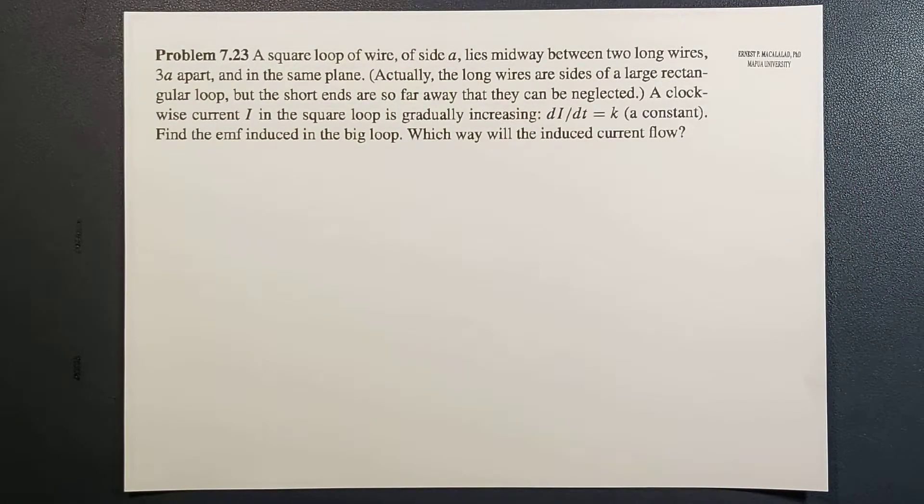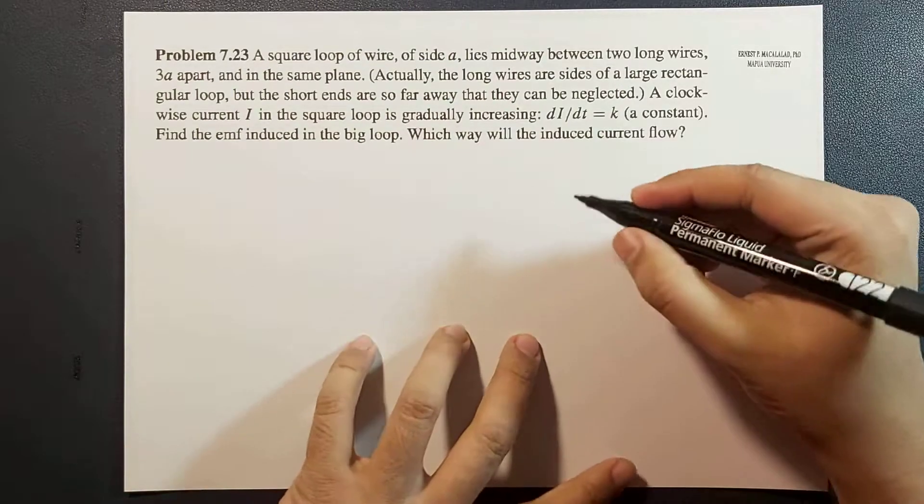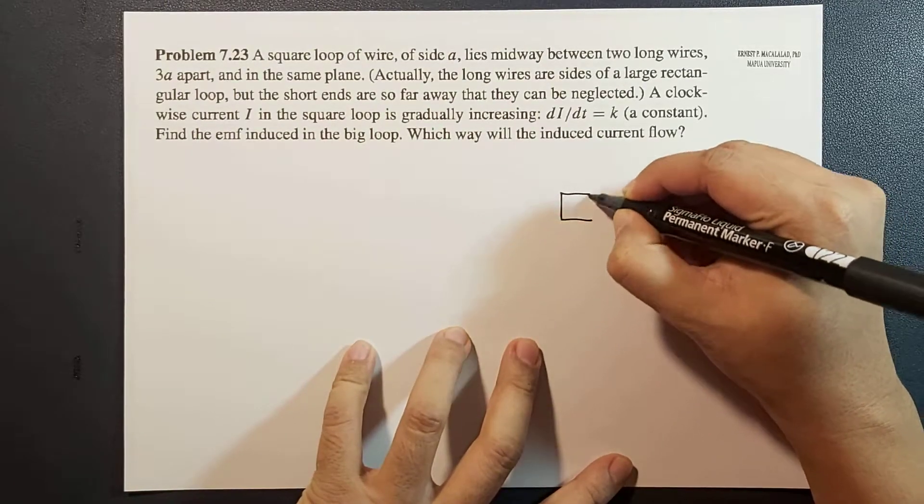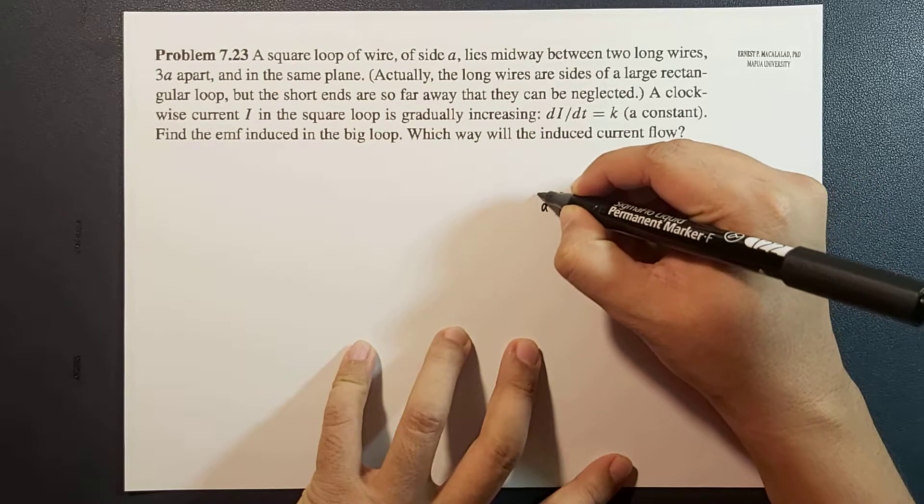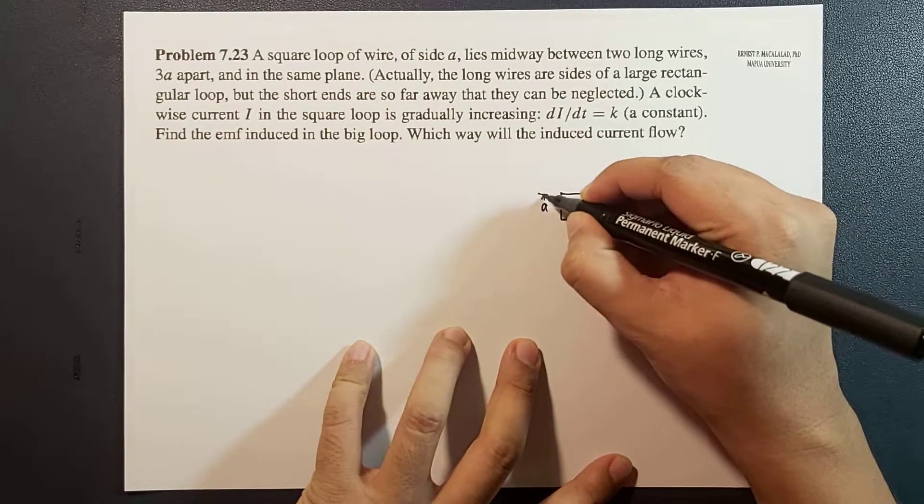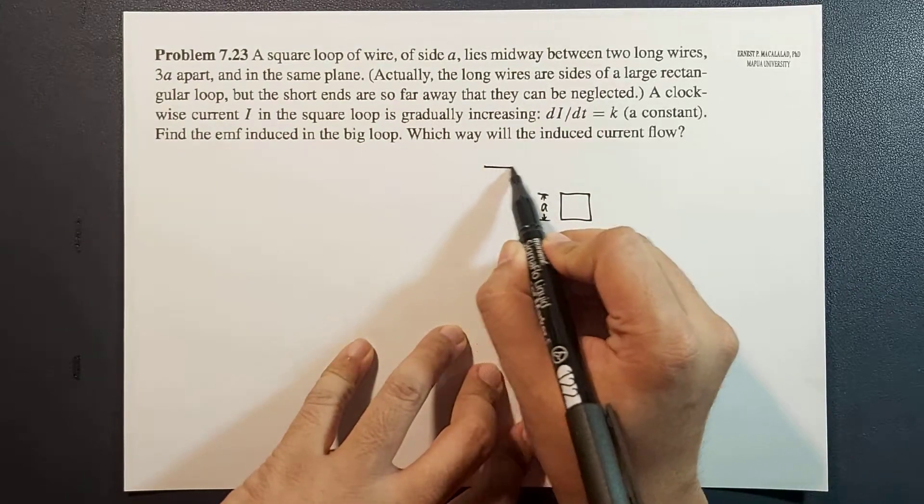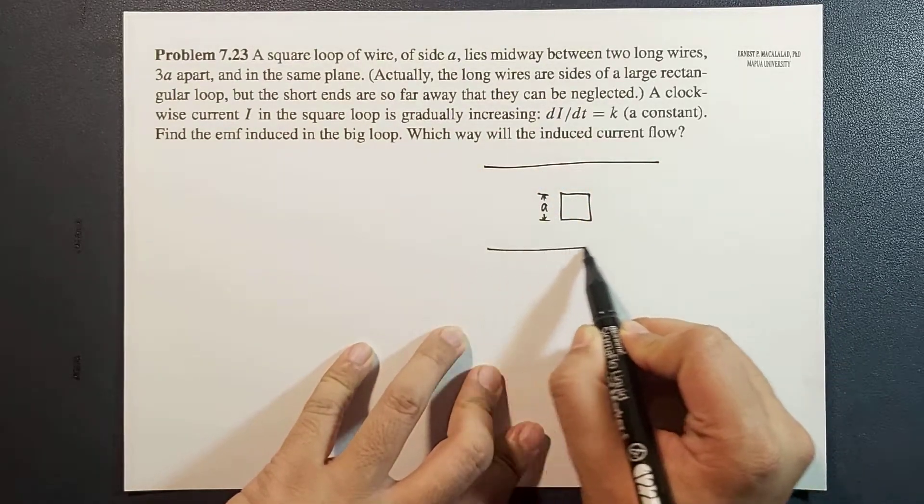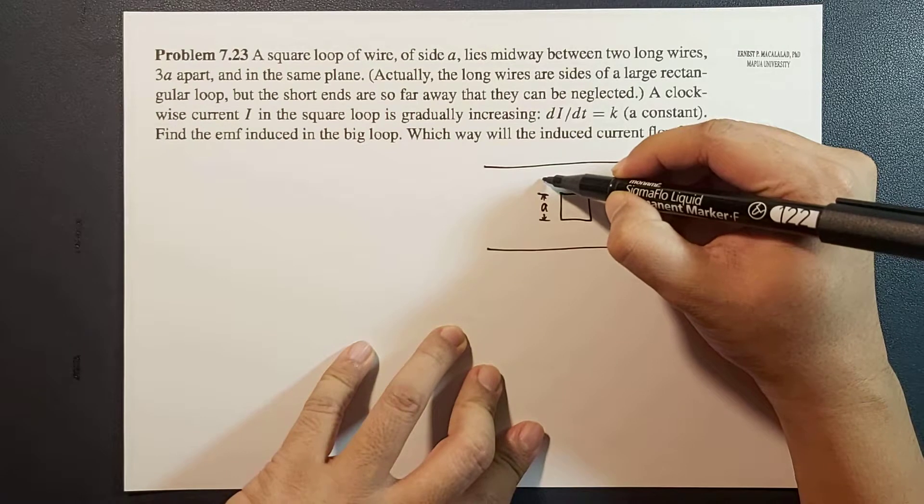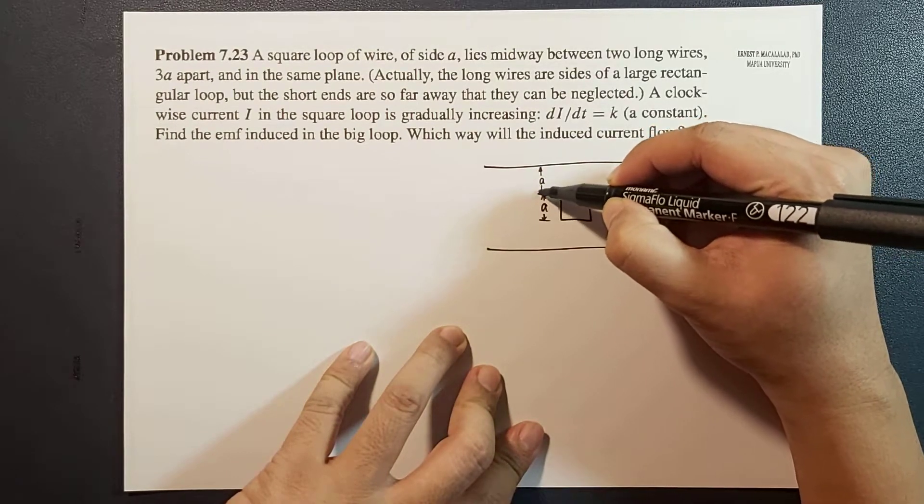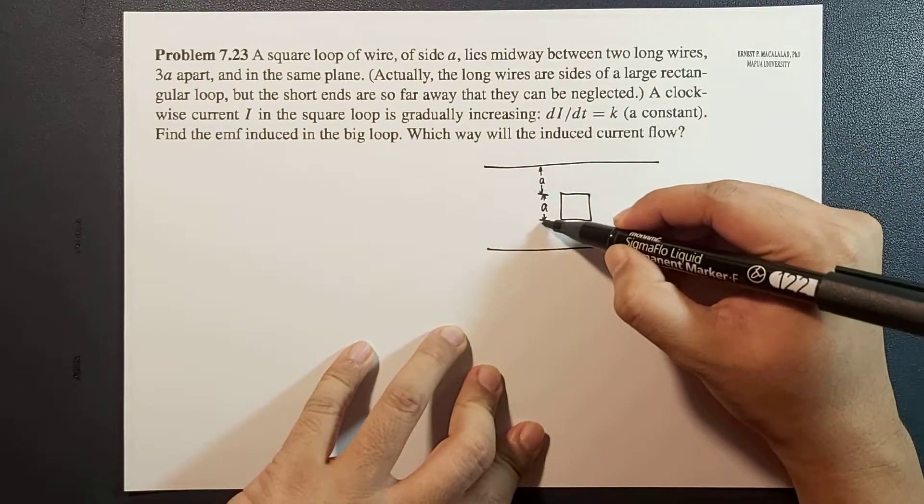In this case, we have, as I mentioned, a square loop of side A. And then on top and below that are your two long wires, which is part of a large rectangular loop.